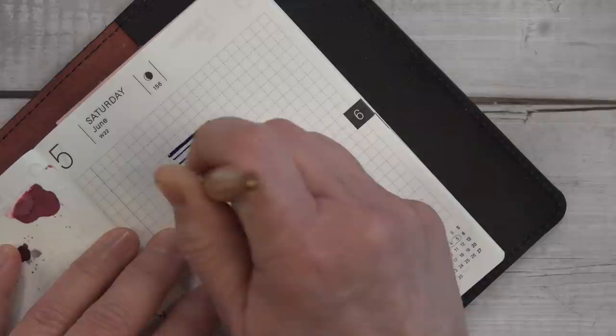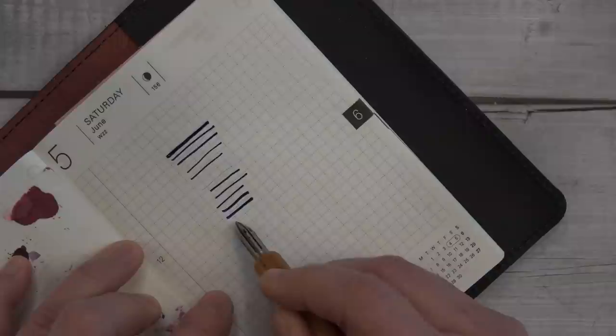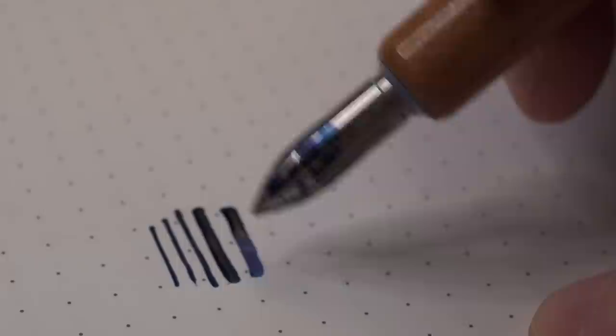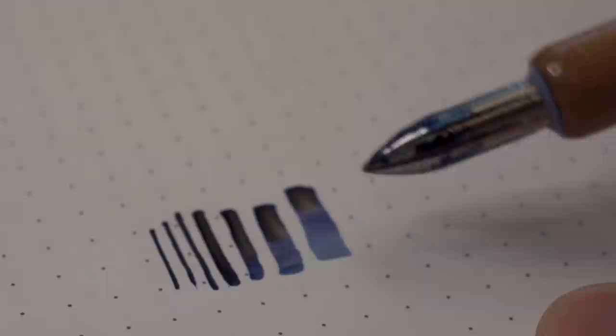The really useful part is that it'll make different widths of lines depending on the angle that you hold the nib at. The higher the angle, the thinner the line will be. You can go all the way up to just about 90 degrees. At 90 degrees it just doesn't write.